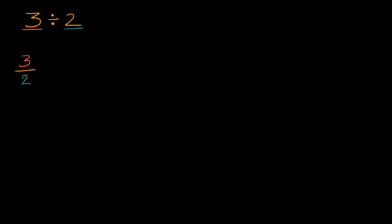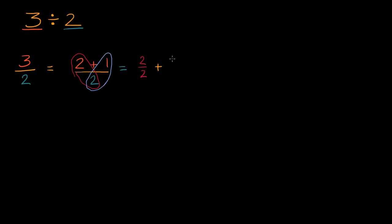You could say this is the same thing as three halves. But how can we express this as a decimal? You might recognize that three halves is the same thing as two halves plus one half. So this is the same thing as two plus one over two, which is two over two plus one over two. And two over two is just one, so this is going to be equal to one and one half.